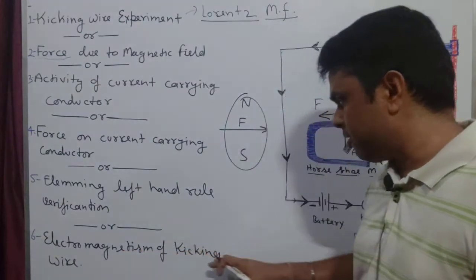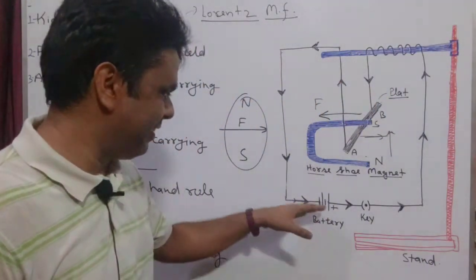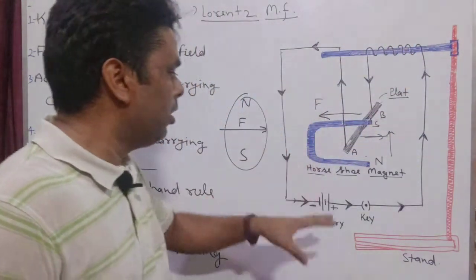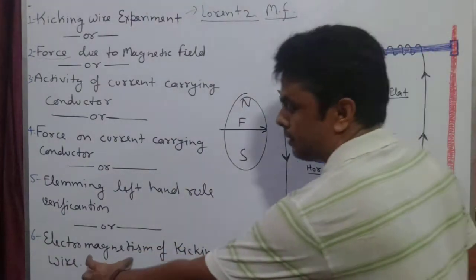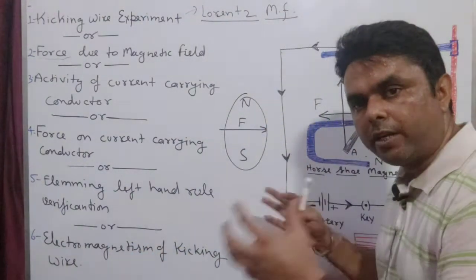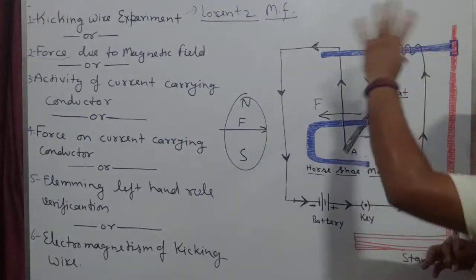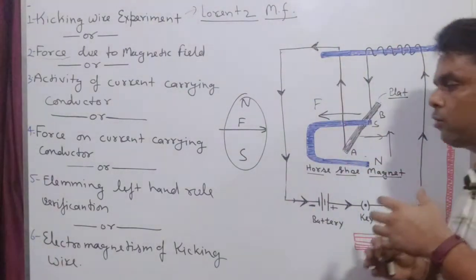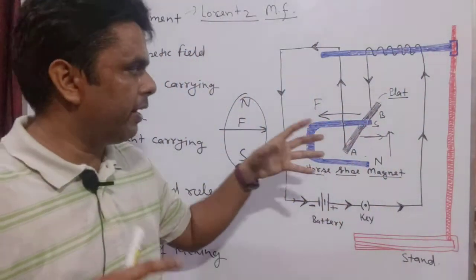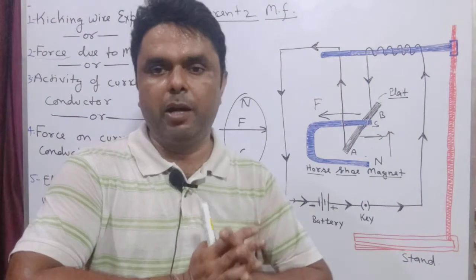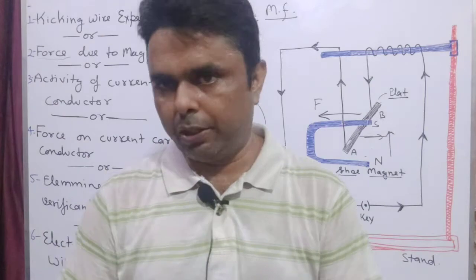The last sixth kick was electromagnetism of the kicking wire. Electro means electricity is there — charges are flowing — and due to that current, there is a magnetism, a magnetic force generated between points A and B, or thoroughly through the wire. Because of this, electromagnetism is generated, and when the horseshoe magnet's magnetic field and the wire's magnetic field collide, they kick. So today we learned a total of six kicks.